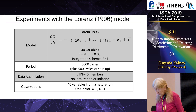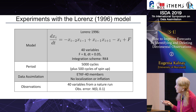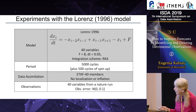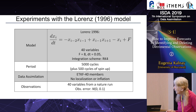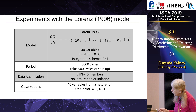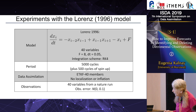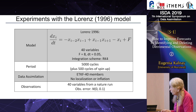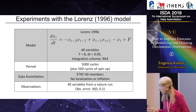Finally, I'll give results using the simplest experiment model, the Lorenz 1996. You know this model — the equation looks like it has advection and diffusion, has 40 variables, and we use the standard F equal to 8. We run everything with 5,000 cycles with a spin-up. For data assimilation, we use the ETKF with 40 members and no localization or inflation. Observations are obtained — one for each of the 40 variable locations — from a nature run.